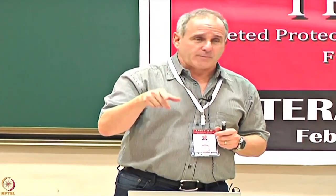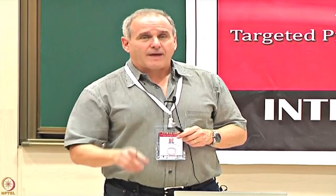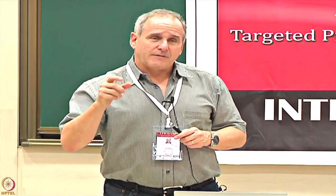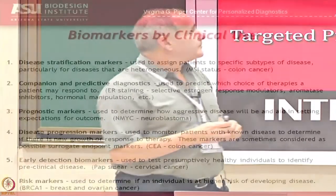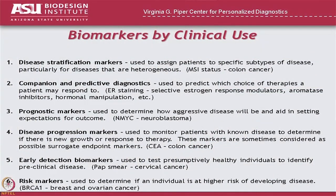So a companion marker is a test you give together with the plan of giving a drug, to determine if that patient will respond to that drug. These days in the US, if you're going to develop a new therapeutic for any type of cancer that targets a pathway, the FDA usually requires that you have a companion diagnostic — a test that will specifically tell patients whether they're likely to respond.